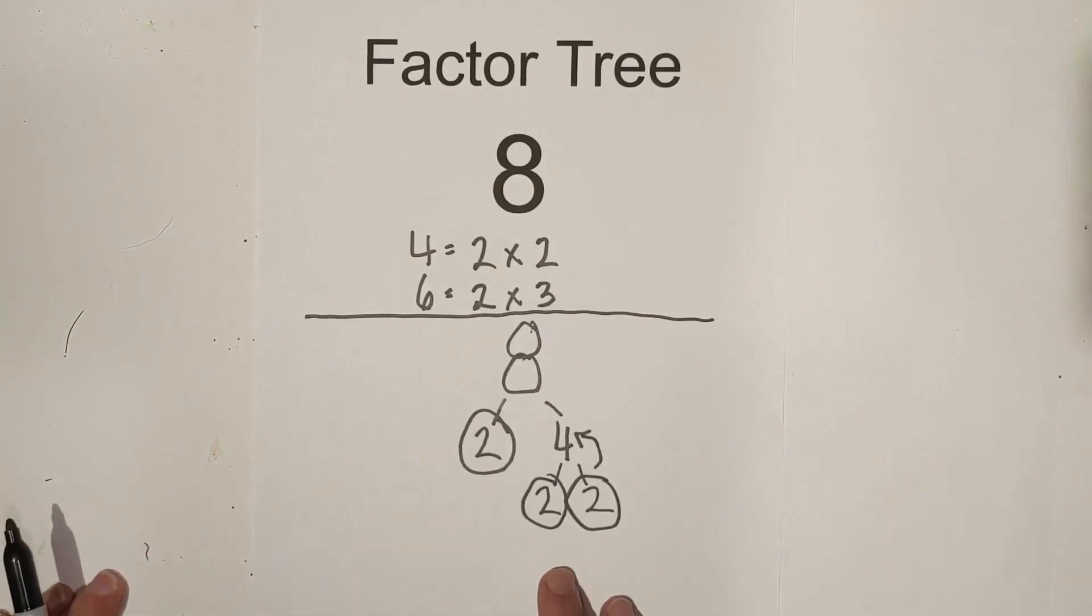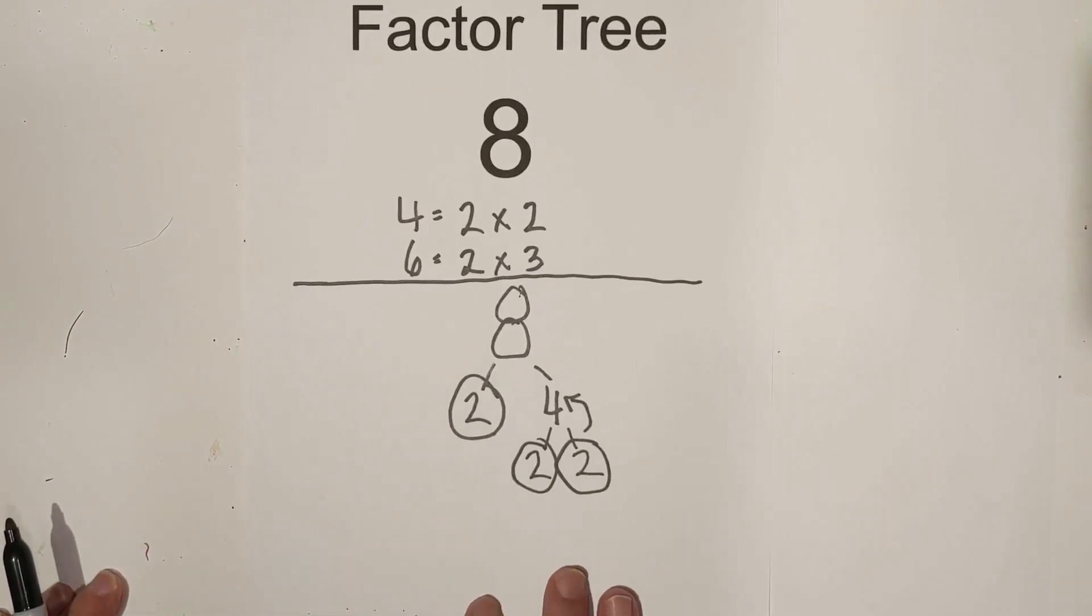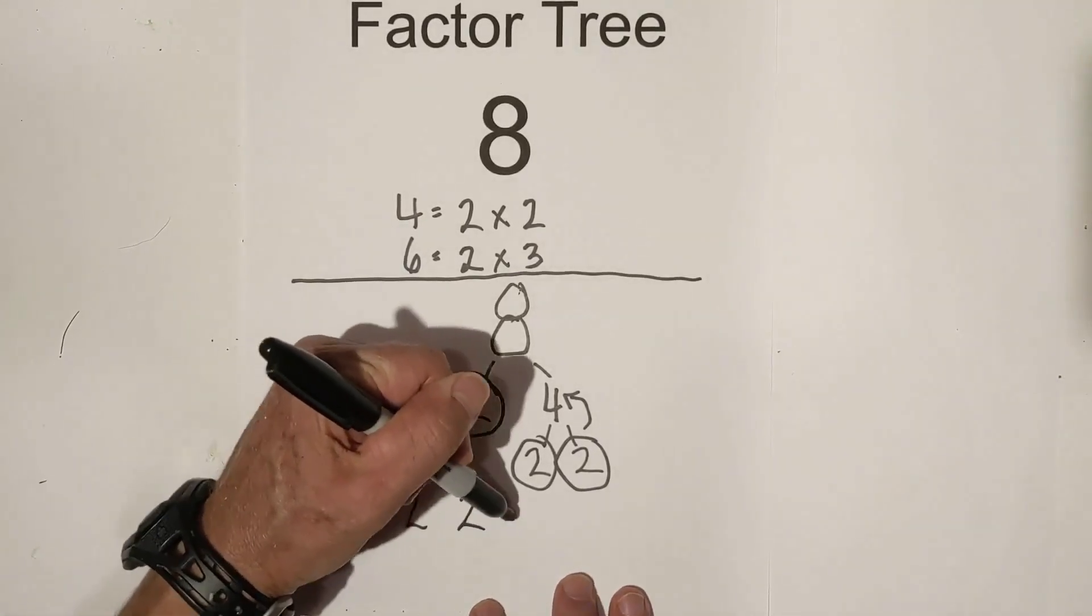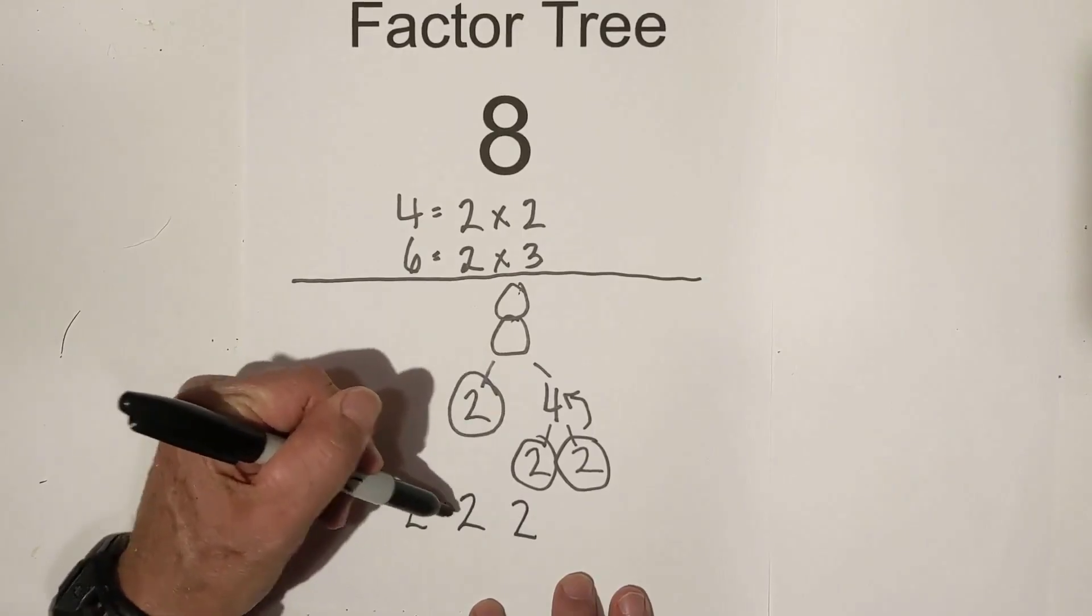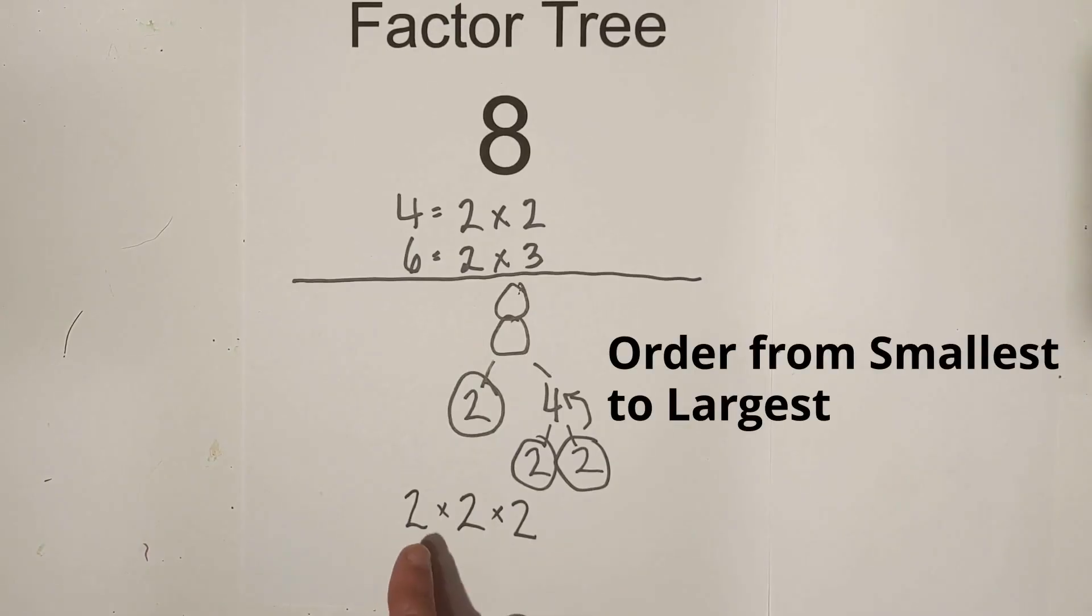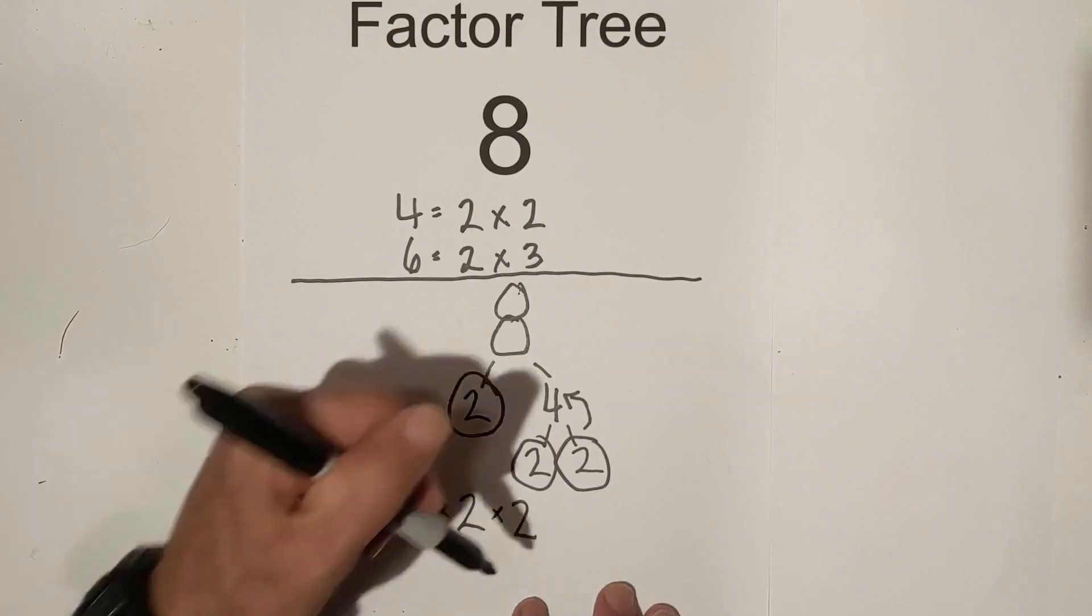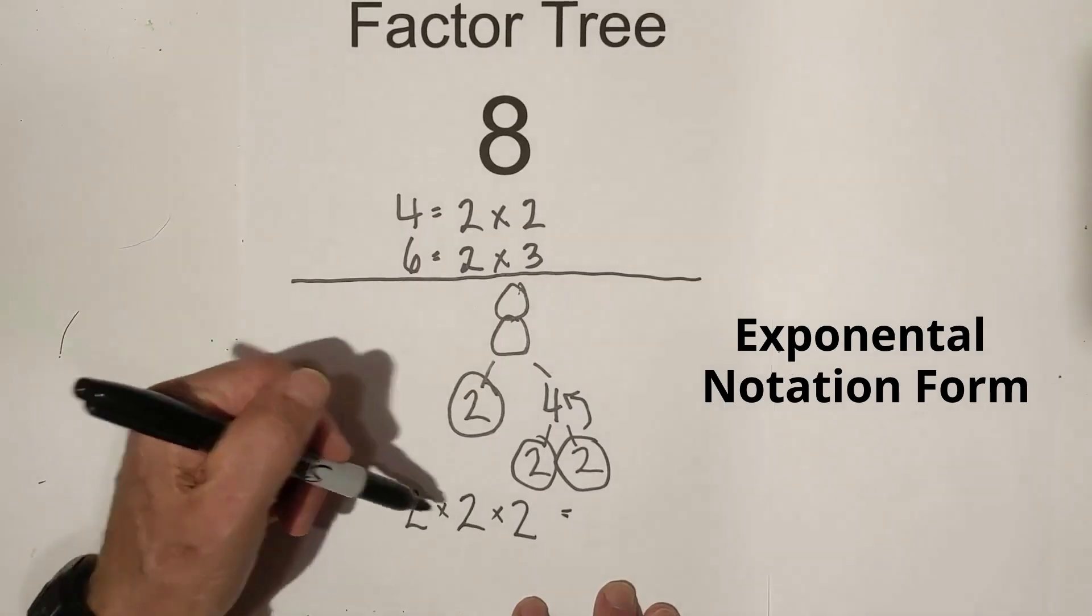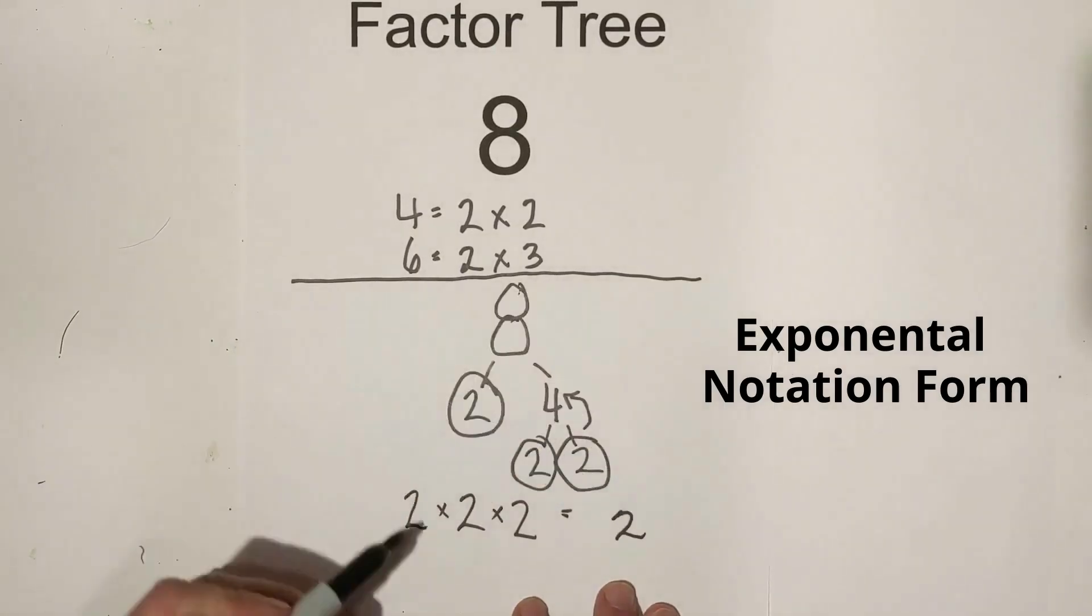So the prime factors of eight would be two times two times two. Now a couple of rules for writing it: you generally write it from smallest to largest. Since it's all the same, you just write twos. Or you could rewrite this in exponential form, and that would be two to the third - two with an exponent of three.